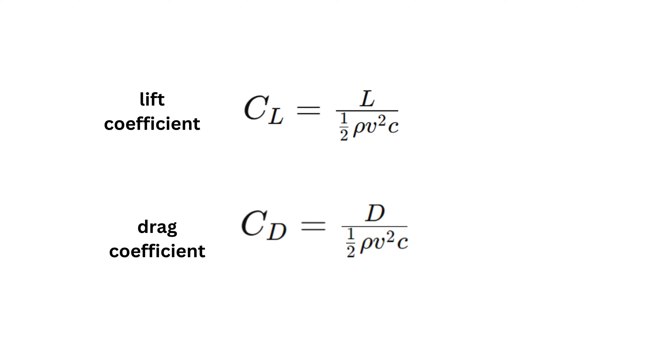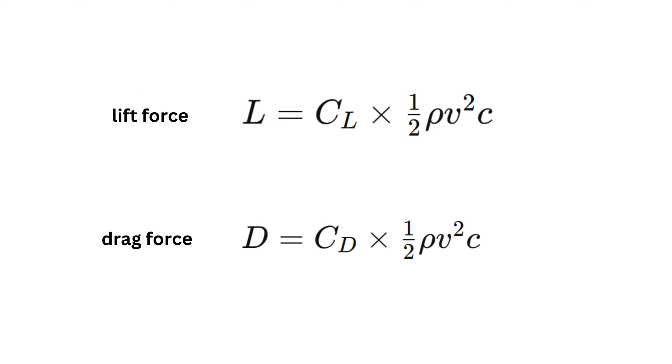You can do the same with the drag force to obtain the drag coefficient. If we rearrange these equations, we can see that the lift and drag generated by an airfoil is proportional to the squared velocity, and linearly proportional to the size of the airfoil and the air density. If you know the airfoil's force coefficients, you can simply plug it into these equations and obtain the aerodynamic forces for a specific flow density and velocity condition.